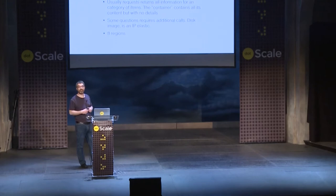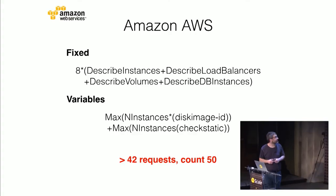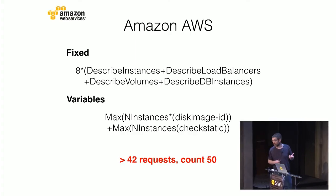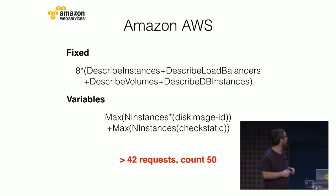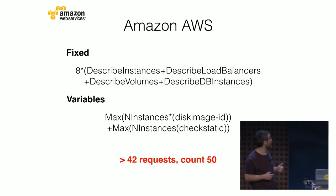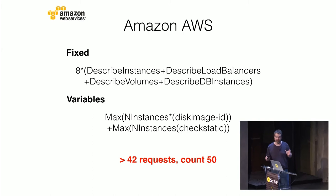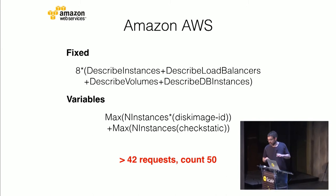Some questions require additional queries. For example, if you want to know — describe the image that served to boot an instance — you need to make an additional call. And you have eight regions. So in the end, we have eight describe instance, describe load balancer, describe volume, and describe DB instance for the RDS SQL. That's 42 requests. And you have a variable to get the elastic IP address, if an IP address is elastic, and to get the image for an instance. So usually, for a 40 to 50 element infrastructure, it's like 42 to 50 queries.